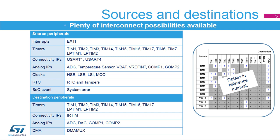This slide indicates the list of source and destination peripherals. Source peripherals are the EXTI, timers, USARTs, analog IPs, clocks, RTC, and system error.